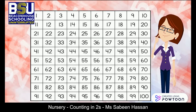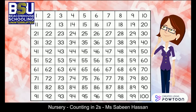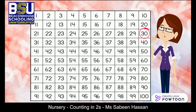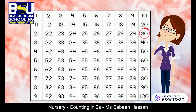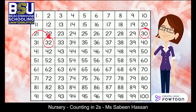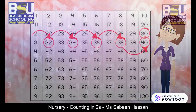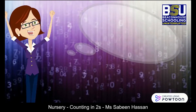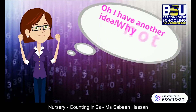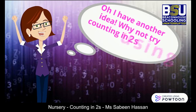We can count in twos starting from any number. Let's take the example of number 30. We'll count 30, skip 31, and land on 32. Then skip 33, land on 34. Keeping the same sequence: skip 35, land on 36, then 38, then 40.